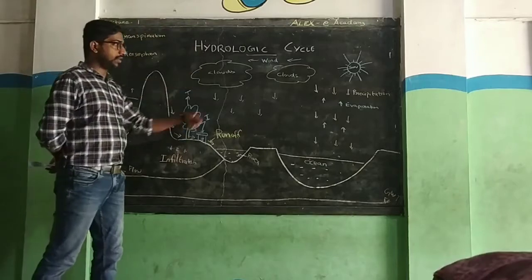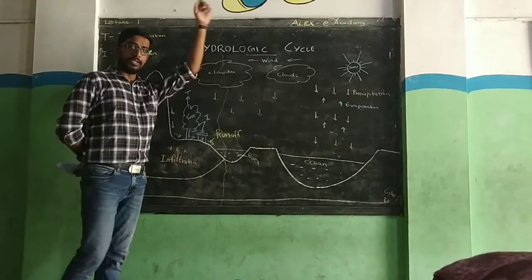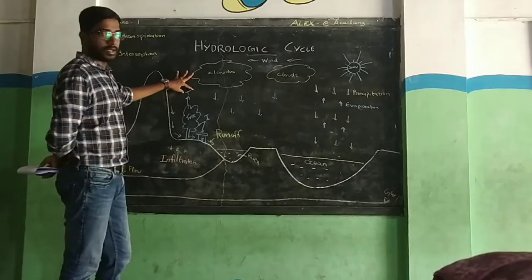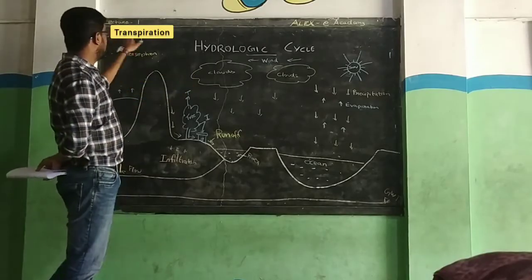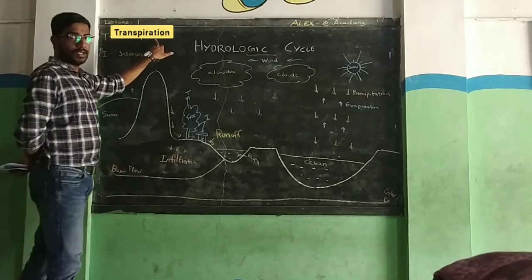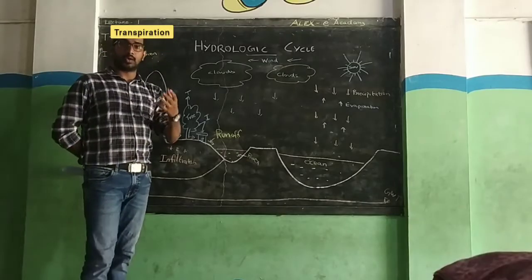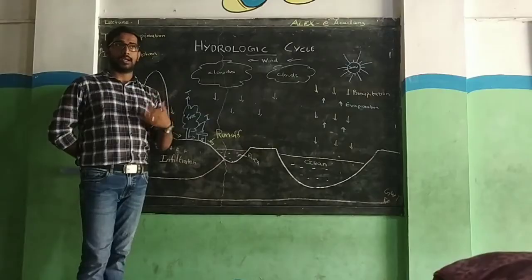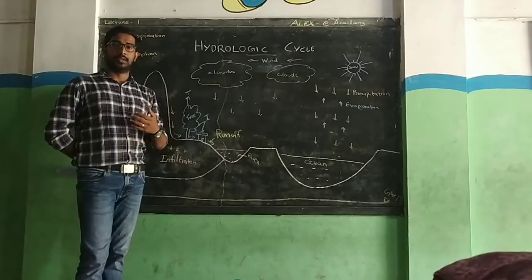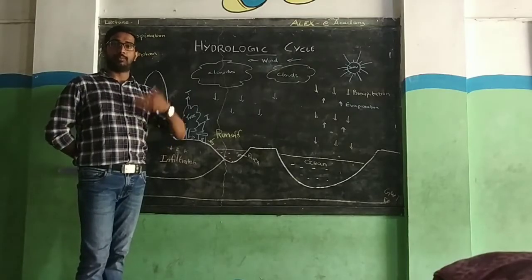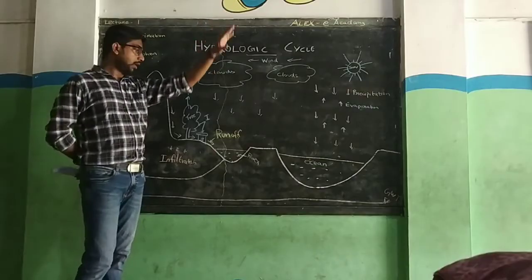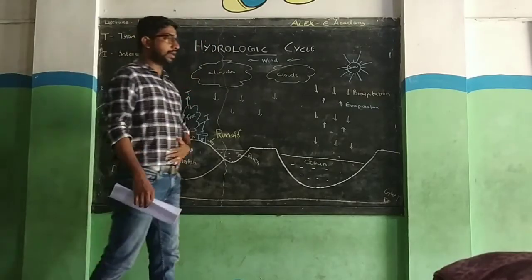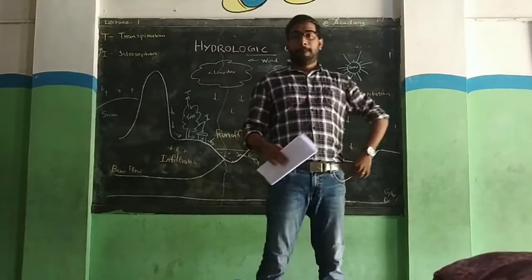In this way, there is one term called transpiration. Transpiration is a real process — plants and roots absorb ground water and release it. It is a transpiration and evaporation process. This is part of the hydrologic cycle.